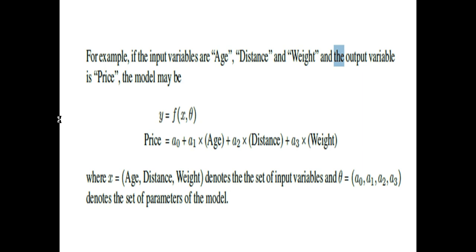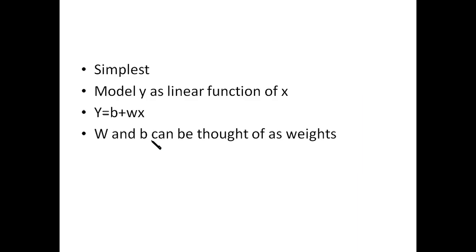For our features, there is a parameter theta. Here we have a0, a1, a2, and a3. These are the parameters we generate to predict the price. This is an example for a linear regression equation.